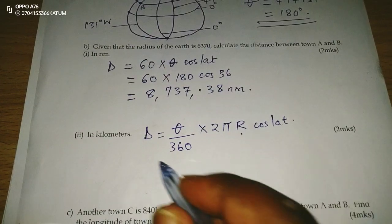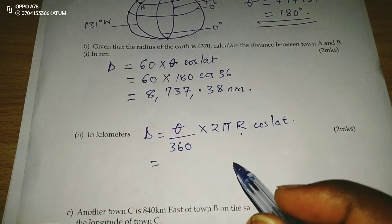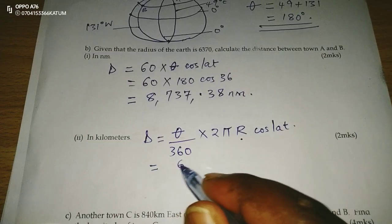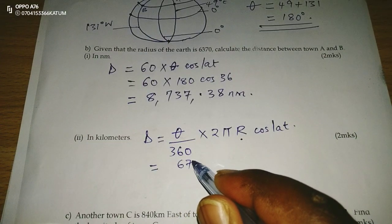r is going to be the radius of the earth, which is 6370.